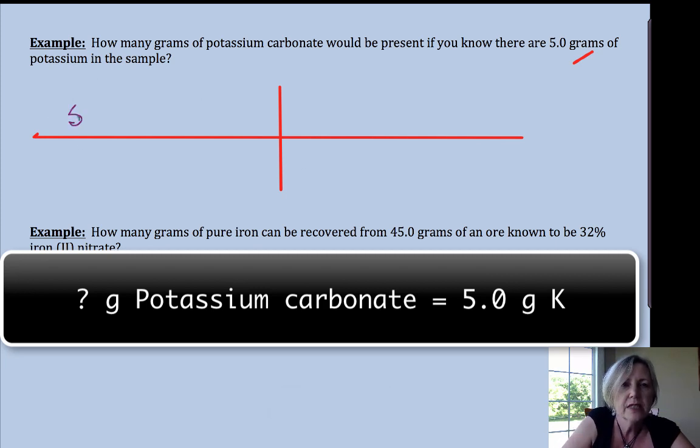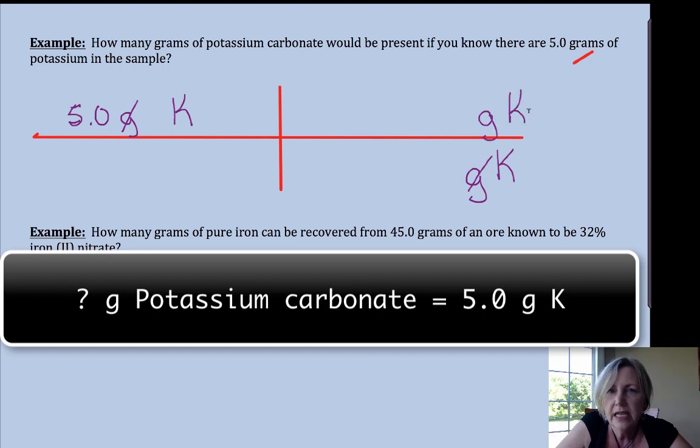So this time I have 5.0 grams of potassium. If I want potassium to cancel I need to put it in the denominator and I want grams of potassium carbonate. Right? Well the whole is on top this time.